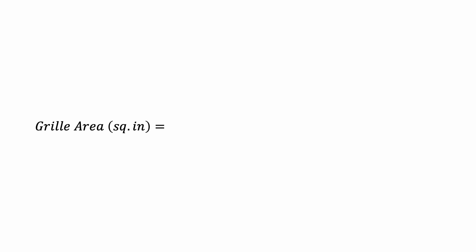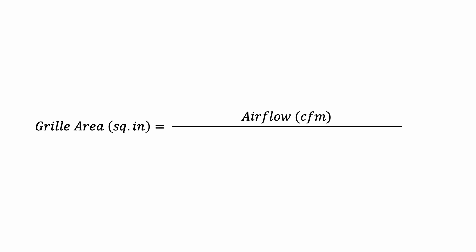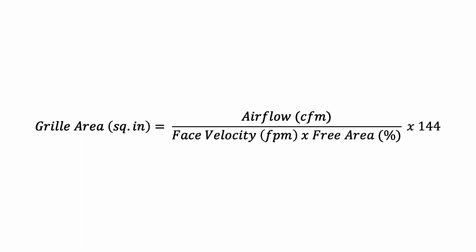Return air grill can be sized using the grill size formula. The formula is: grill area in square inches equals the airflow in CFM divided by face velocity in feet per minute, multiplied by the free area of the grill in percentage, and then multiplied by 144 to convert from square feet to square inches.